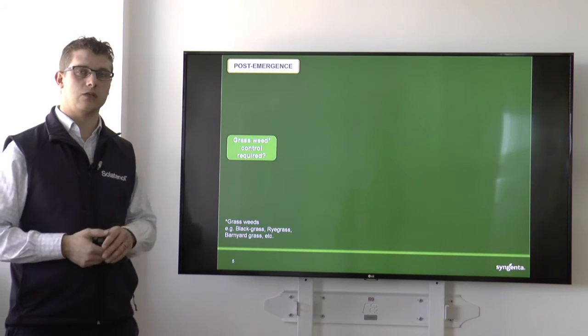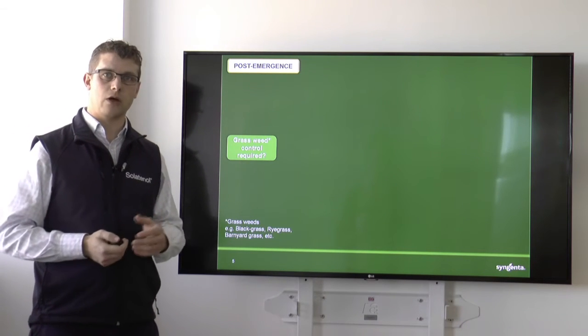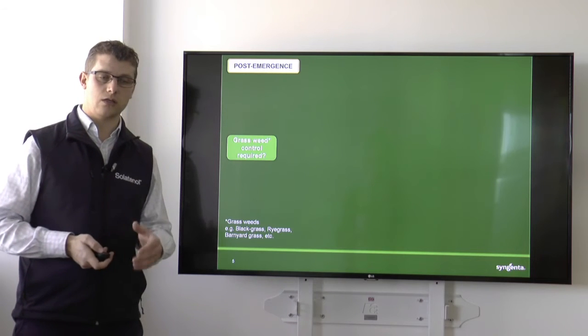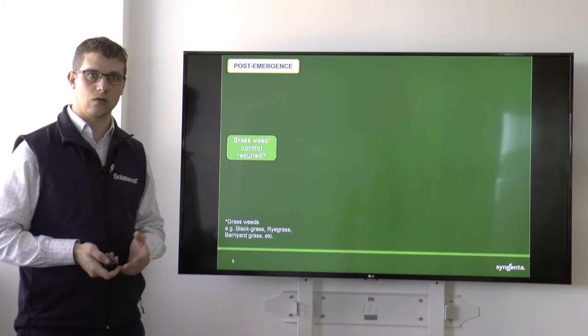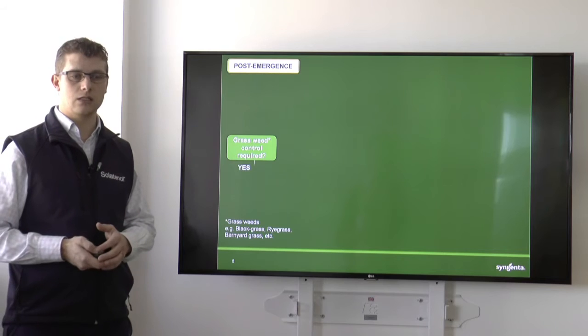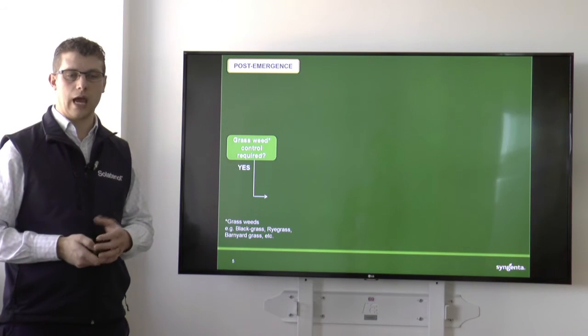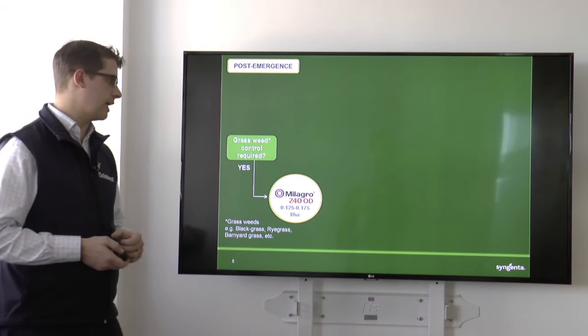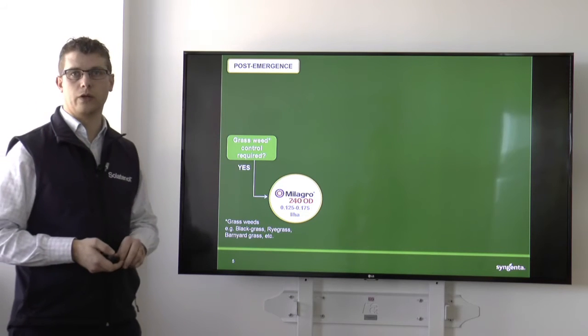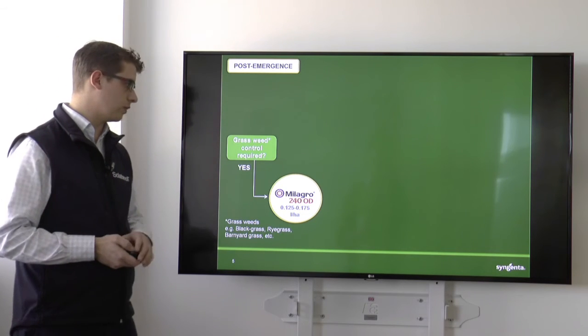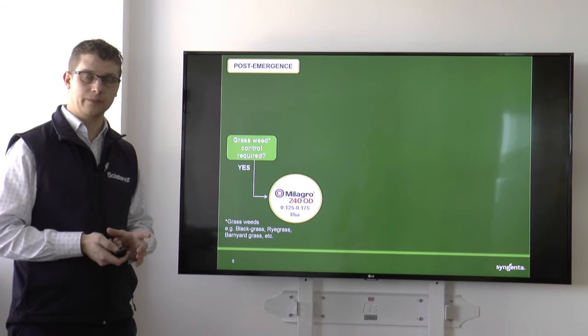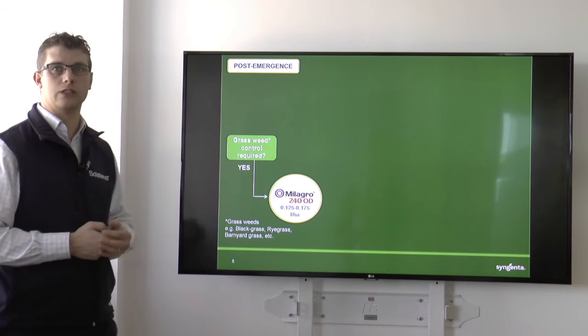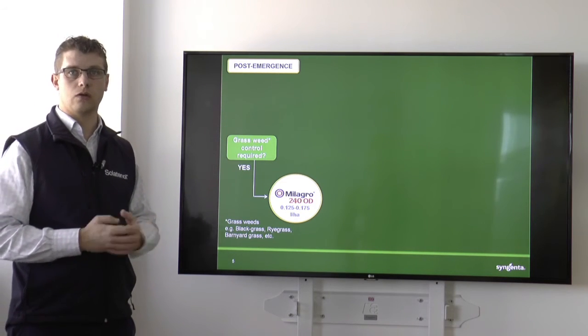So the first question we need to ask ourselves for the post-emergence situation is, do we need grass weed control? If the answer is yes, then we're going to look at something like Milagro. So we'll start with the base of Milagro at 0.125 to 0.175 litres a hectare, and that will hopefully take care of your grass weeds.